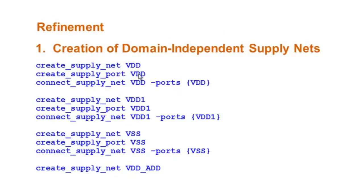We create SupplyNet VDD, supply port VDD and connect them. Create SupplyNet VDD1, port VDD1 and connect them. SupplyNet VSS, port VSS and connect them. We create SupplyNet VDD Add.